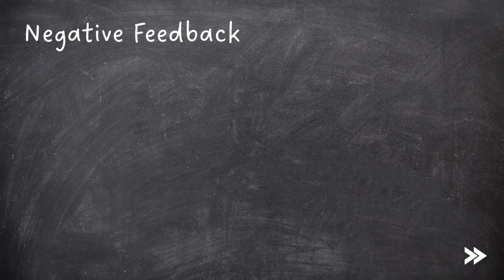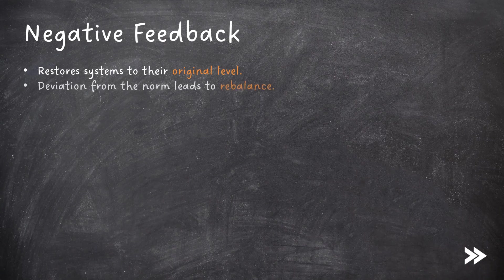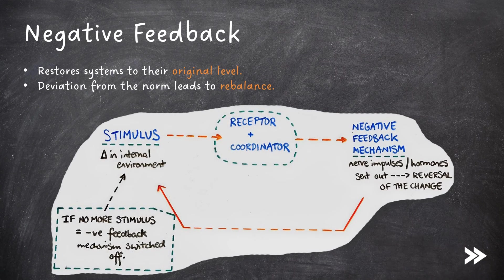Next we need to note the principle of negative feedback. This restores systems back to their original level — deviation from the norm leads to rebalance. First of all, we have a stimulus, which is a change in the internal environment. This is detected by a receptor and is passed on to a coordinator, which coordinates a negative feedback mechanism, meaning that either nerve impulses or hormones are sent out, which leads to the reversal of the change. If no more stimulus is detected, the negative feedback mechanism is switched off.